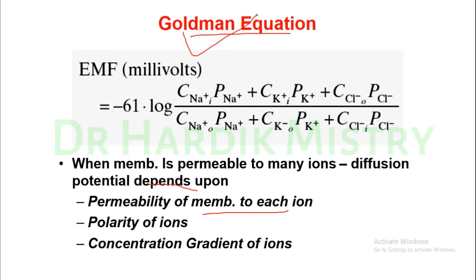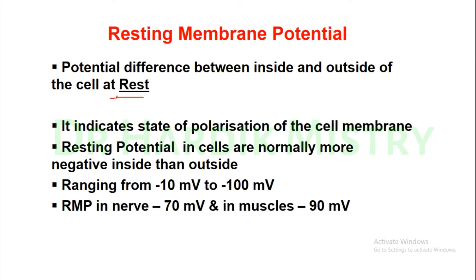To recap: the Nernst equation is used to find the potential for only one ion, while the Goldman equation accounts for all possible ions by incorporating inside and outside concentrations for each. The resting membrane potential is the potential difference between the inside and outside of the cell at rest — when no movement of ions is occurring and the cell is not excited. It indicates the state of polarization of the cell membrane, and resting potentials are normally more negative inside than outside.